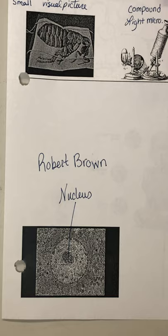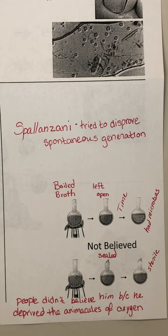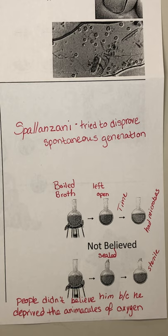Then we got to Spallanzani — the last one we talked about today — and his poor, sad story. Spallanzani tried to disprove spontaneous generation, the idea that living things came from nothing. People thought a broom in the corner created mice, hay in the barn created mice, meat on the counter created flies. He said living things come from living things, and he tried to disprove spontaneous generation.